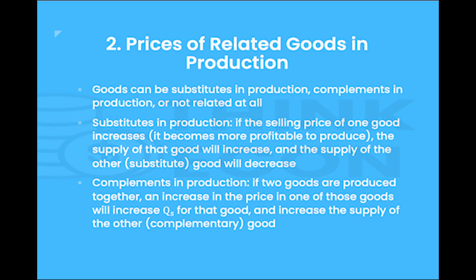The second shift factor is prices of related goods in production. Goods can be substitutes in production, complements in production, or not related at all. In the case of substitutes in production, if the selling price of one good increases — meaning it becomes more profitable to produce that good — the supply of that good will increase and therefore the supply of the other substitute good will decrease, because it is relatively more expensive to make than the cheaper good. In the case of complements in production, if two goods are produced together, an increase in the price of one will increase the quantity supplied for that good and thereby increase the supply of the complementary good.